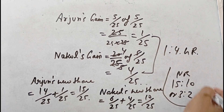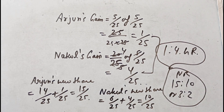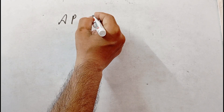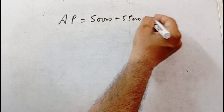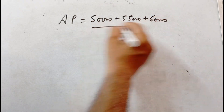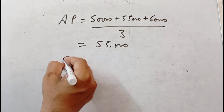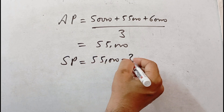So the new ratio is 15 by 25 to 10 by 25, which we can simplify to 3 is to 2. This is the new profit-sharing ratio. The gaining ratio is 1 is to 4 for Arjun and Nakul. Now let's calculate the valued goodwill of the firm. For the valued goodwill, we take the average profit of the last 3 years: 50,000 plus 55,000 plus 60,000 divided by 3 gives an average profit of 55,000.